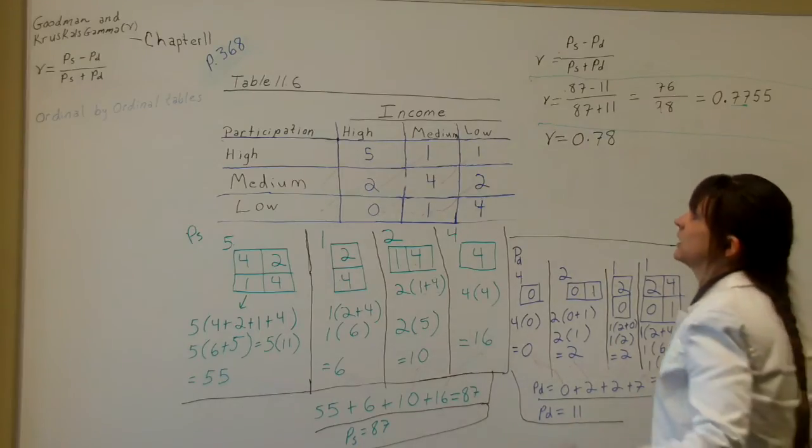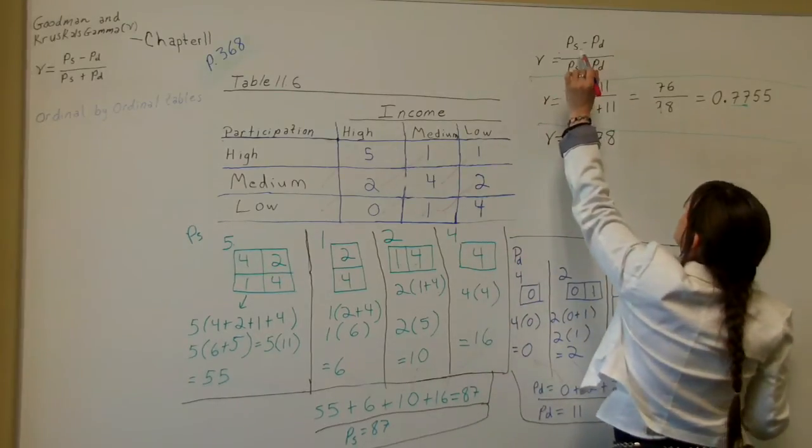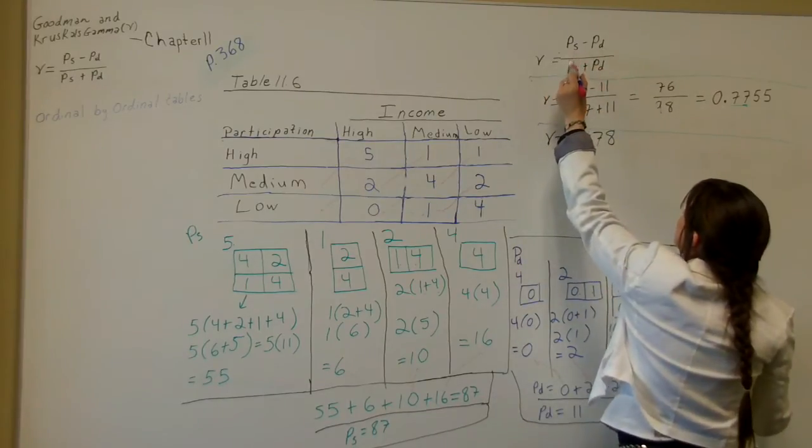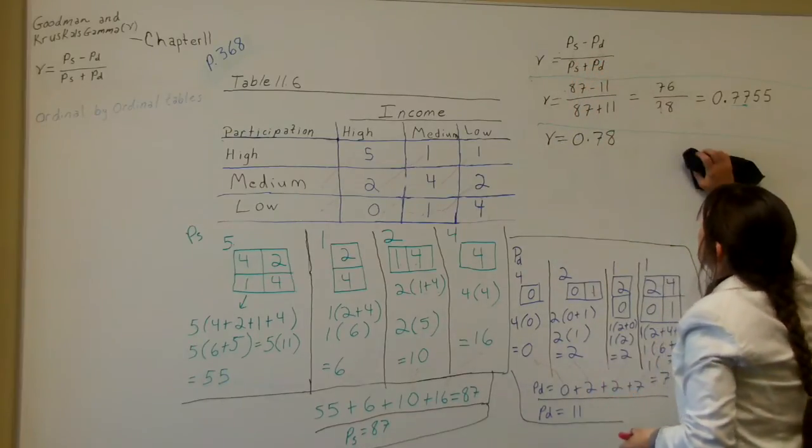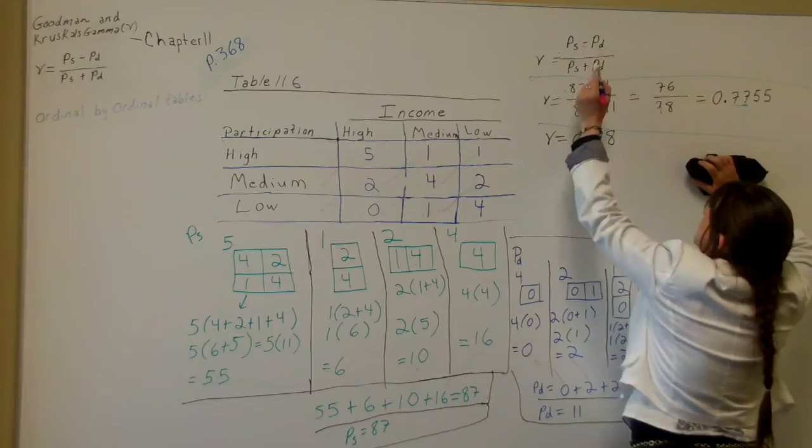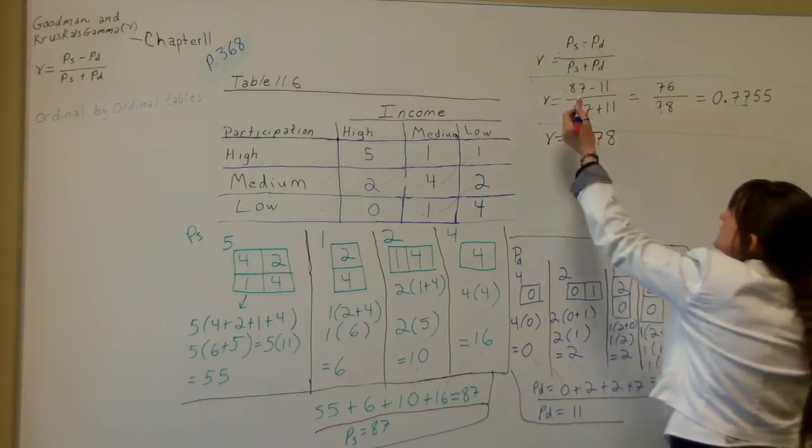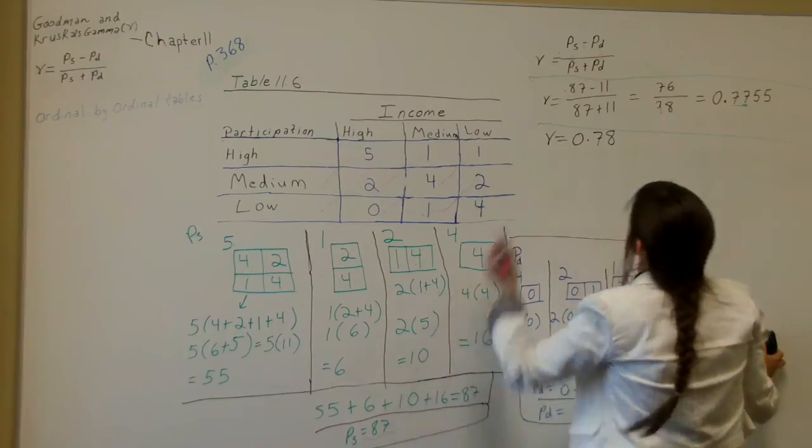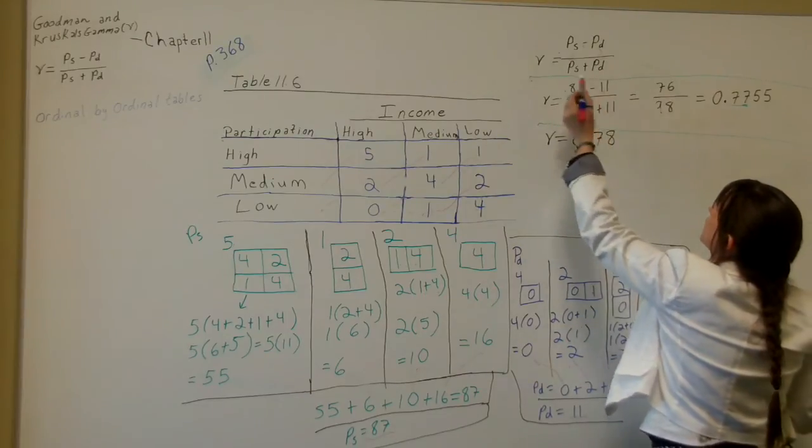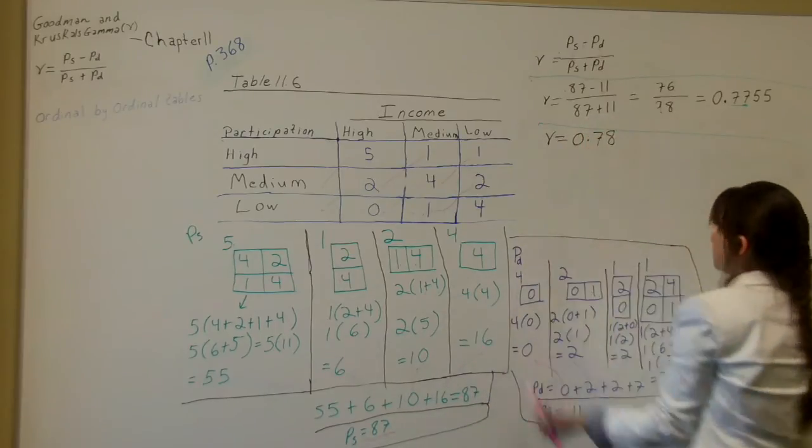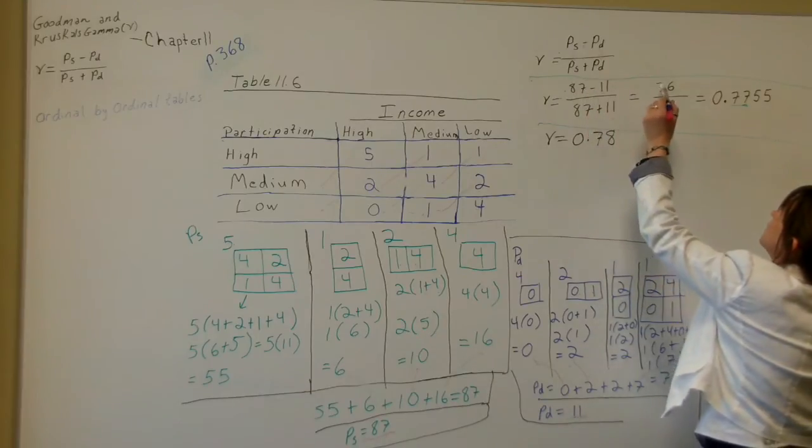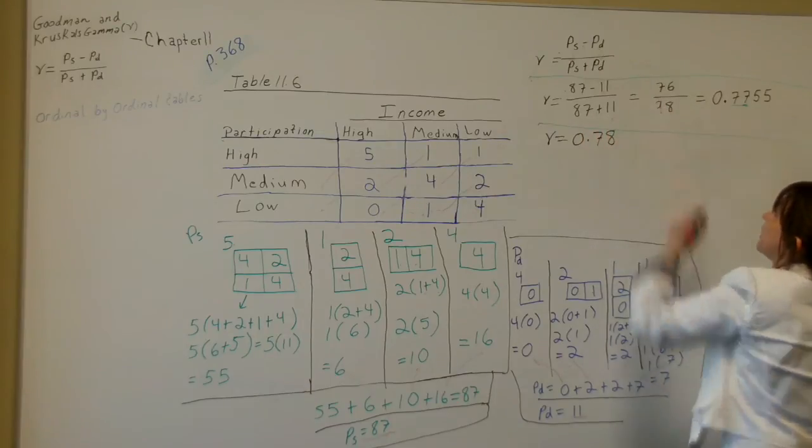We have the stuff we need to calculate gamma now because gamma is P subscript S minus P subscript D over P subscript S plus P subscript D. Notice these are the same numbers corresponding to it. The PS is on the top and the bottom and the PD is on the top and the bottom of the division. It's just one is being subtracted and one is being added. So the P subscript S is 87 as we calculated over here. So it's 87 minus the P subscript D, which is 11, over P subscript S, 87, plus the P subscript D, 11.